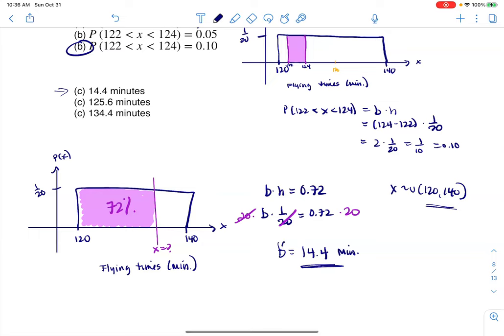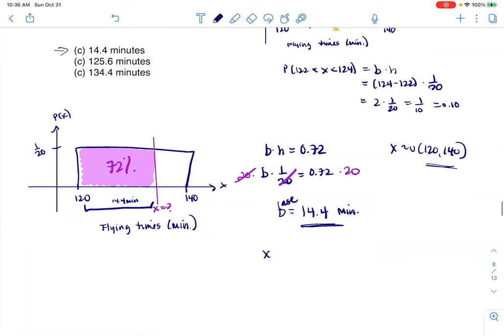It's that your base, I want to reiterate this, your base is 14.4. So this distance needs to be 14.4 minutes. So really, if I want to find that x value, and let me scoot this up, if I want that x value, that would be 120 plus 14.4, I need my starting point, plus my base. And when I do that, that is 134.4 minutes, right? And that puts me right here at the 72nd percentile.